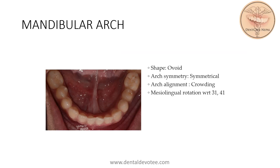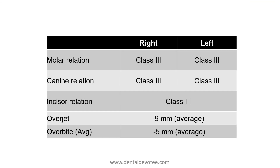On the mandibular arch, the shape was ovoid. It was symmetrical and minor crowding was present on the arch. A mesiolingual rotation with respect to 3-1 and 4-1 was noted. Molar relation was Class 3 bilaterally and canine relation was Class 3 bilaterally as well. Incisor relation was Class 3 with a negative overjet of 9 mm and average overbite of 5 mm.